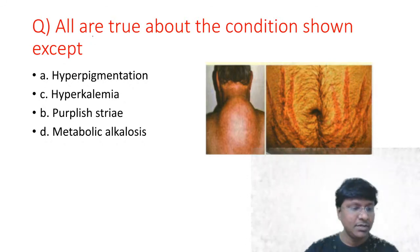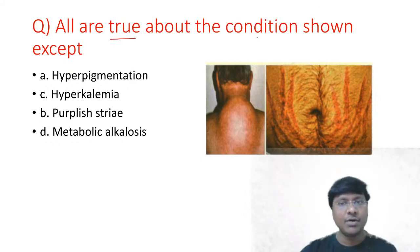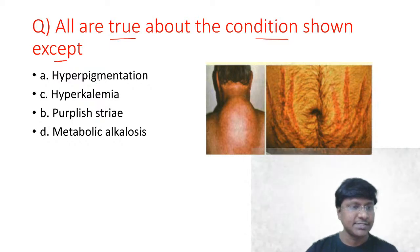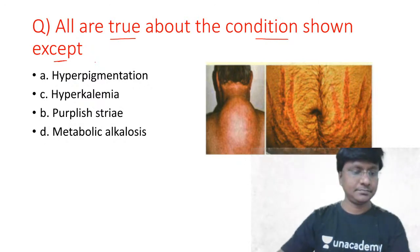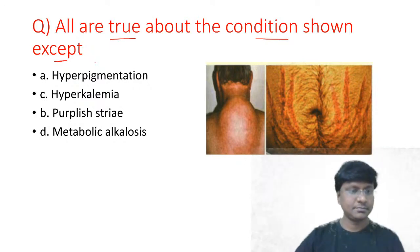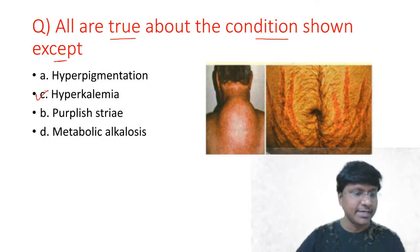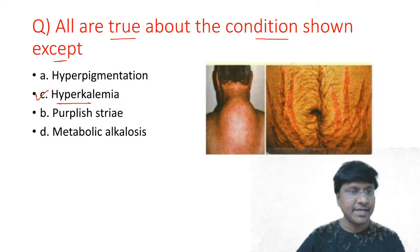First question: all are true about the condition shown except — hyperpigmentation, hyperkalemia, purplish striae, metabolic alkalosis. What do you think is the correct answer? Very good — SK Rai has answered correctly. The answer is hyperkalemia. Hyperkalemia will not be seen in this particular clinical condition.